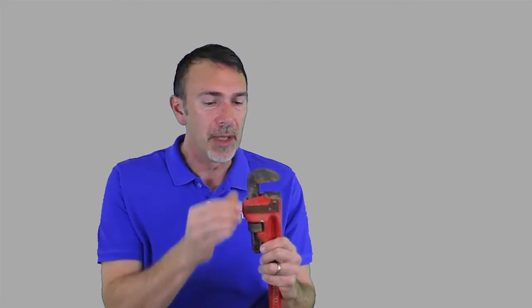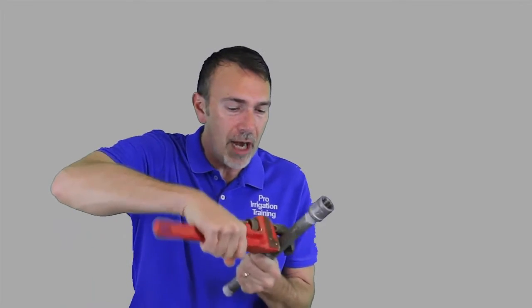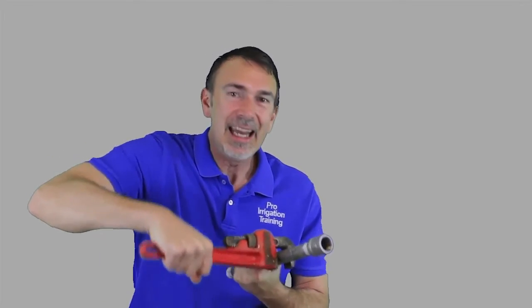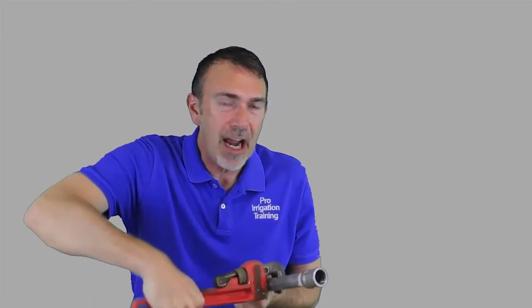But that looseness in the jaw is what allows you to grab a hold of the steel and it grip. Even with the flat surfaces and the teeth here, that little bit of looseness allows you to grab a hold of this and that's what it really takes to loosen or tighten up these galvanized steel fittings.